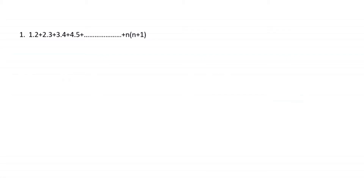My first series is 1×2 + 2×3 + 3×4 and so on. We have to find the sum of n terms. We will find Sn. First we will write the general term Tr. Basically this is your general term. Now let's take Sn, which is the sum of r equal to 1 to n of Tr.